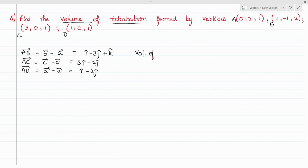Now what's the volume of tetrahedron formula? It's one by sixth of box [A,B,C]. Here it's one by sixth of AB vector, AC vector, and AD vector. So just calculate the determinant.